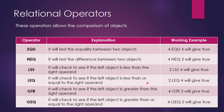Moving on, relational operators allow the comparison of objects. There are six types: EQ, NEQ, LSS, LEQ, GTR, and GEQ. EQ tests the equality between two objects — for example, 4 equal to 4 gives true. NEQ tests the difference between two objects — is there any difference between 4 and 2? Yes, so it gives true.